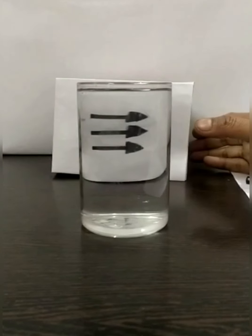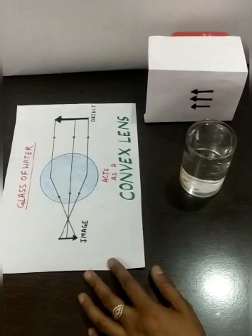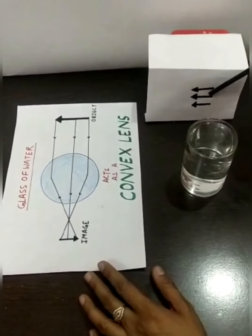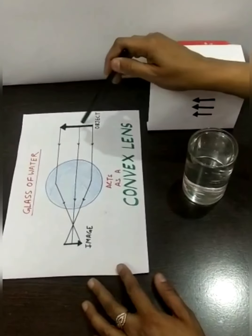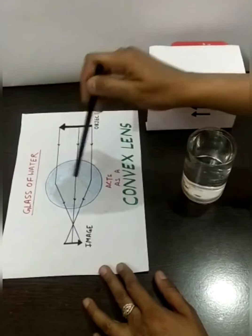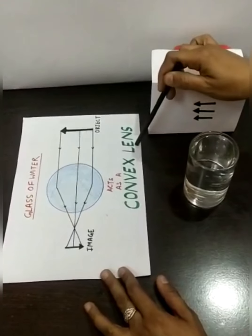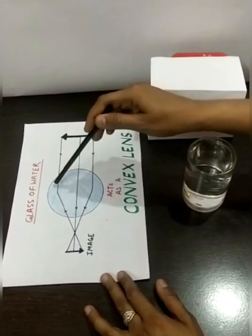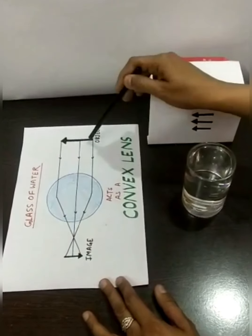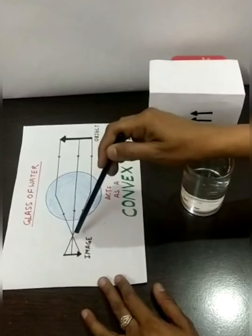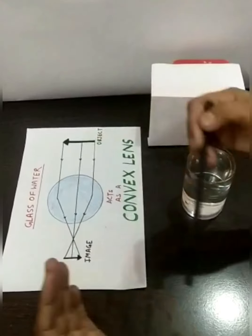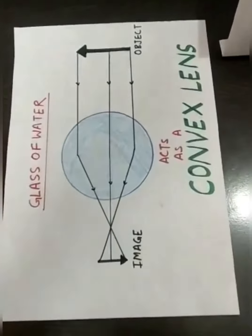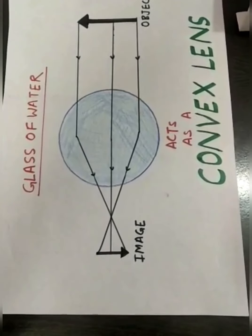You want to understand what is a ray diagram and how this happens? Let's understand the science behind this. These objects' arrows are here, and this glass full of water is acting as a convex lens. The image formed is obtained here — light rays passing through and converging. The image is formed inverted. So in this case, this glass full of water is acting as a convex lens.